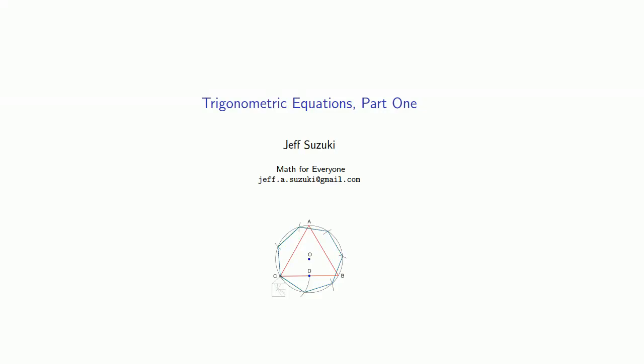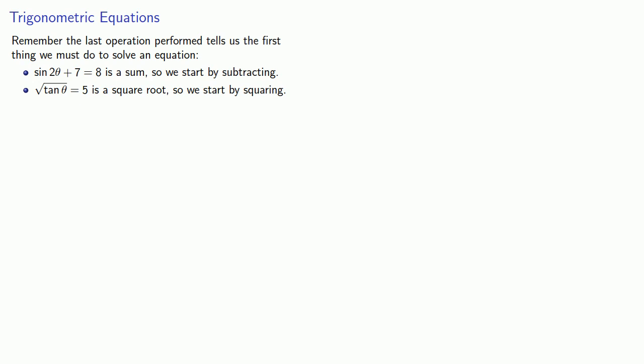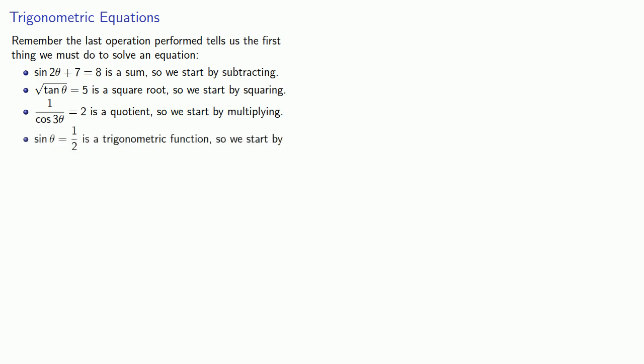Once you have trigonometric functions, you can also have trigonometric equations. The important thing to remember is that the last operation performed tells us the first thing we must do to solve an equation. For example, sine(2θ) + 7 = 8 is a sum, so we start by subtracting. Square root of tangent(θ) = 5 is a square root, so we start by squaring. 1 over cosine(2θ) = 2 is a quotient, so we start by multiplying. And sine(θ) = 1/2 is a trigonometric function, so we start by drawing a picture of the unit circle.